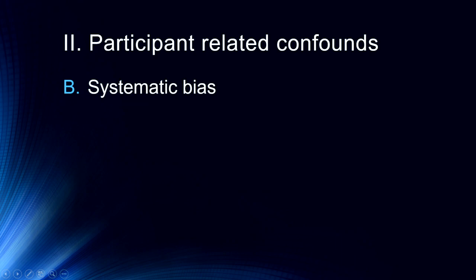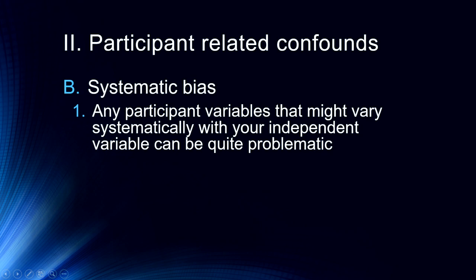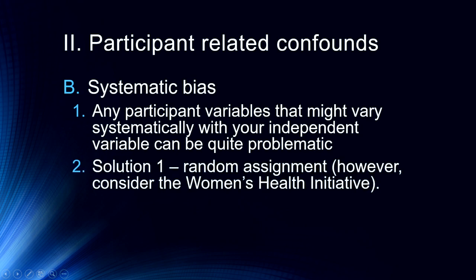The next question we have is about systematic bias. Systematic bias occurs when participant variables vary systematically with our independent variable. These can be quite problematic. If we have a between-subjects design and a participant systematic bias occurs, then instead of our independent variable being responsible for our data, it's possible that a systematic difference between groups is the problem. Our first solution is to randomly assign people to conditions so that we don't have any systematic bias across any levels of our independent variable.